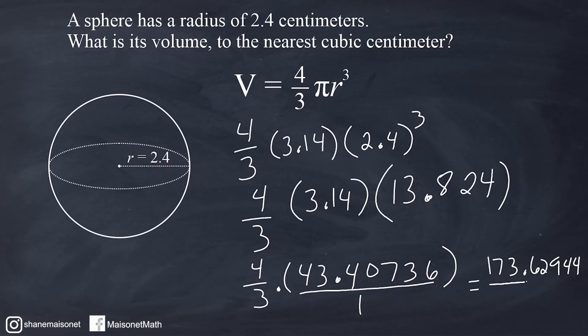Now we take that product and divide by 3, and after doing that we come up with 57.87648. The problem wants us to round to the nearest cubic centimeter, which means whole cubic centimeter. So we're asking ourselves, is this closer to 57 or 58? Because the first number after the decimal is an 8, 57.8 and some change is going to be closer to 58. So the volume is approximately equal to 58 cubic centimeters.